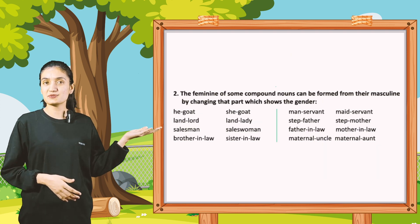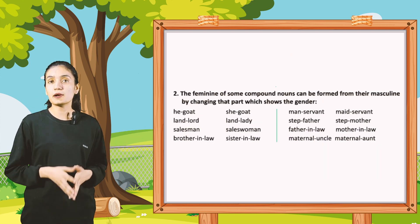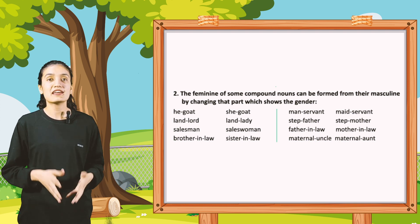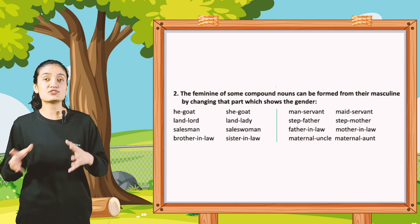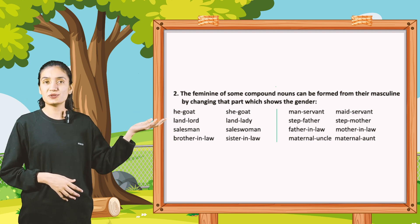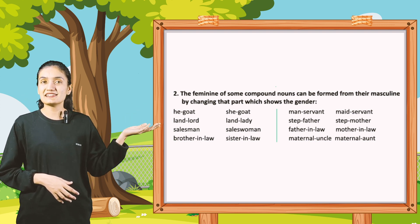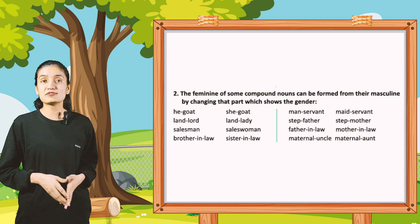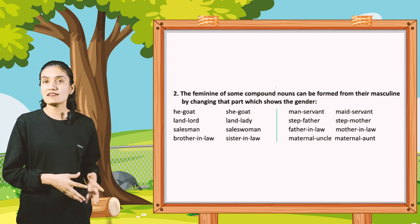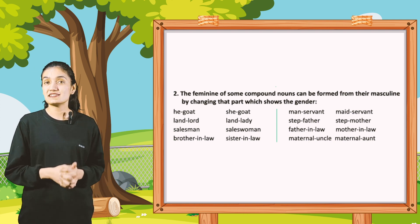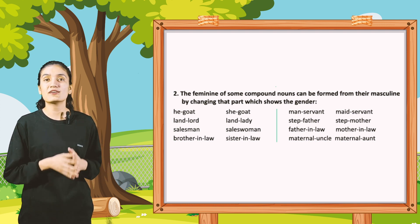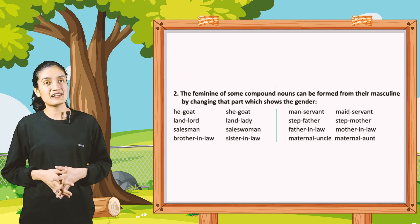Now part 2: the feminine of some compound nouns can be formed from their masculine by changing that part which shows the gender. Examples: he-goat, she-goat; landlord, landlady; salesman, saleswoman; brother-in-law, sister-in-law; manservant, maidservant; stepfather, stepmother; father-in-law, mother-in-law; maternal uncle, maternal aunt.